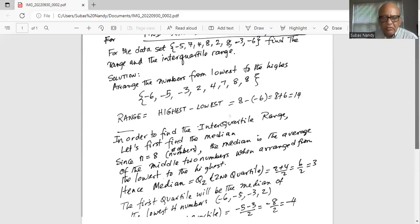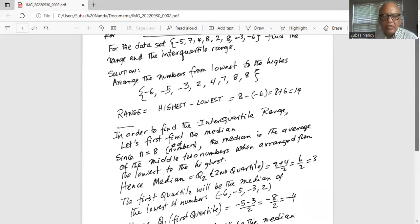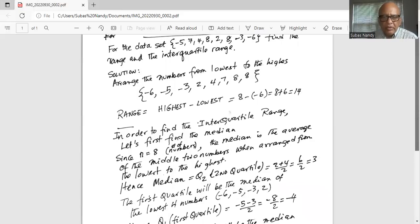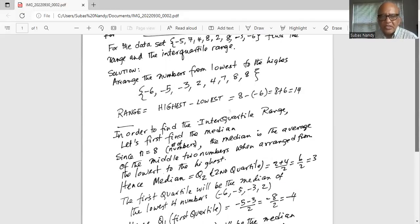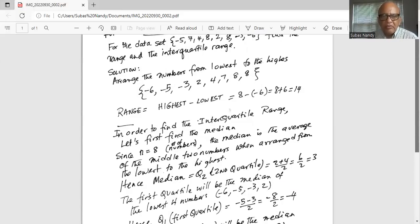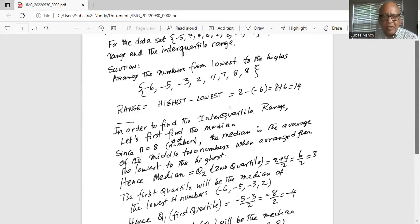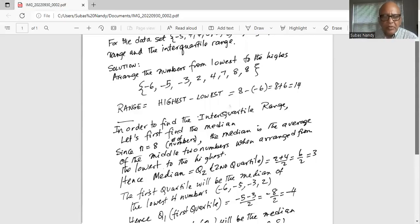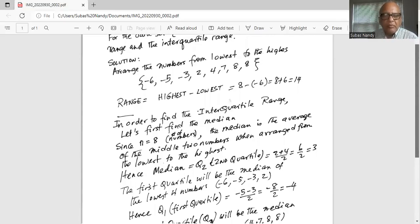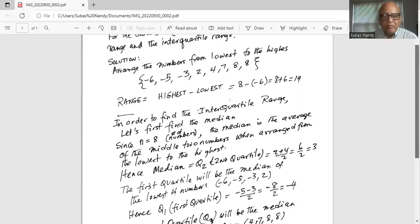Now the first quartile will be the median of the lowest four numbers. What are the lowest four numbers? -6, -5, -3, and 2. Here the sample size is 4, so the median of these four numbers will be the average of the two middle numbers, which is -5, -3, divided by 2.